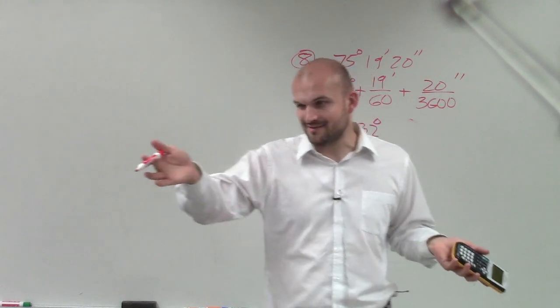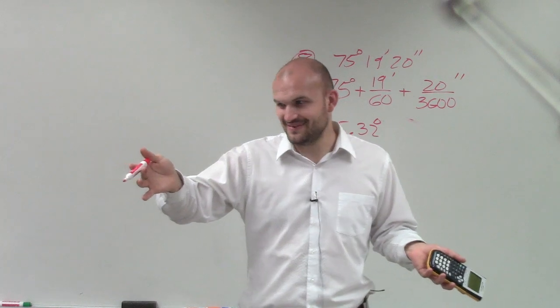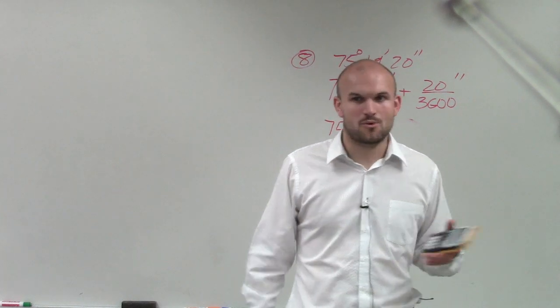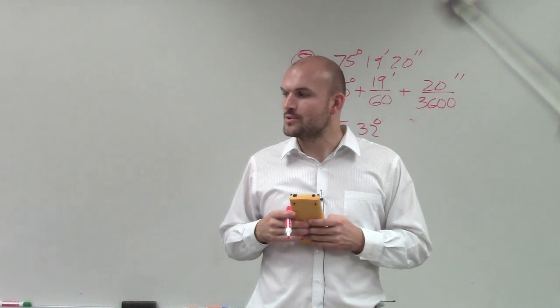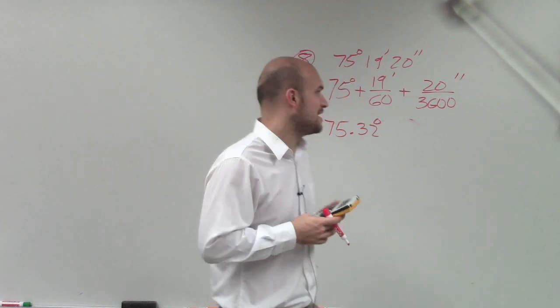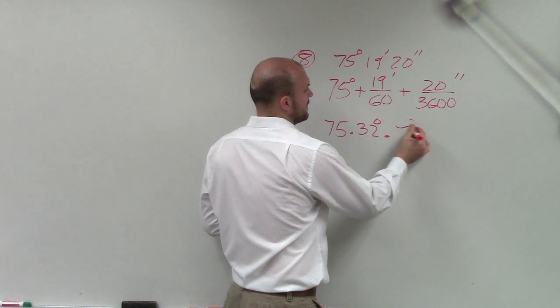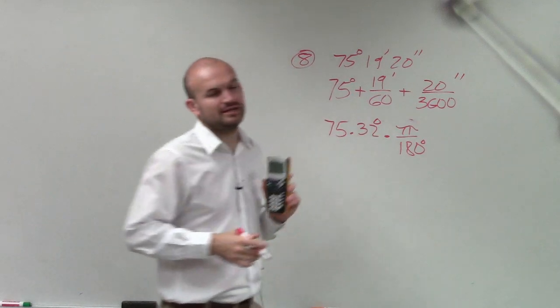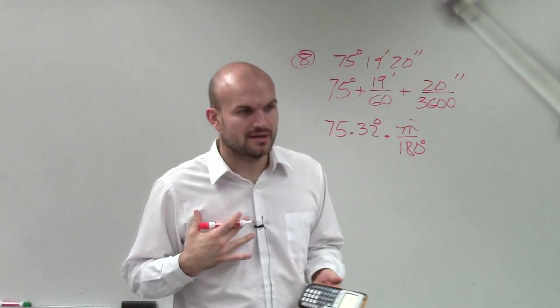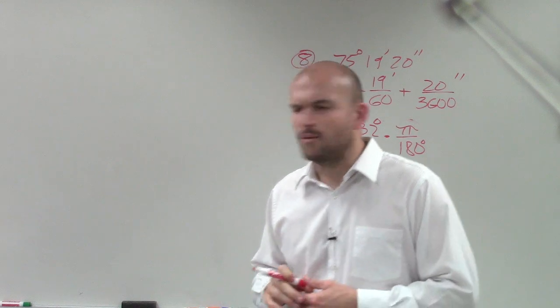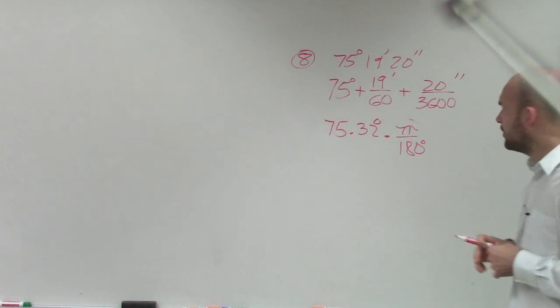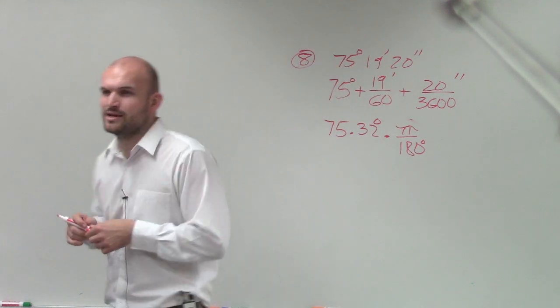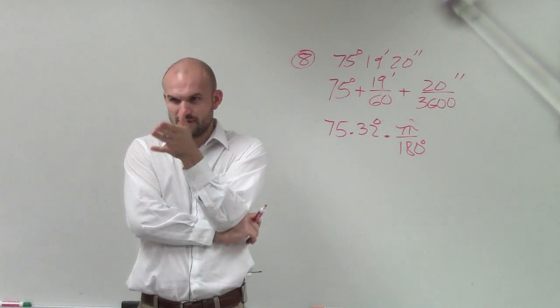We need to multiply it by—remember? Why would it be π over 180 and not 180 over π? There's one special thing that I like to use personally to remember which one is correct. Why do you want to multiply by π over 180 rather than 180 over π? Which is correct, but why do you want to do it? Does anybody know?